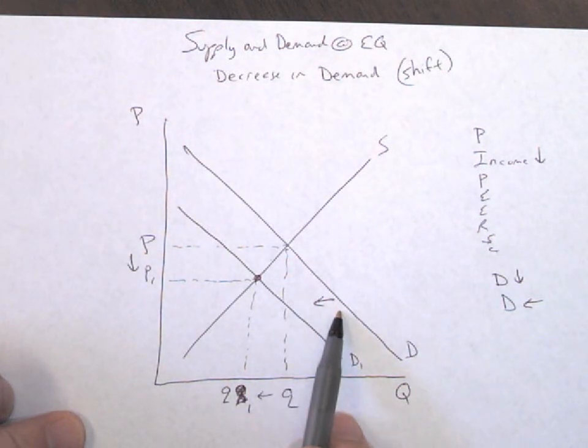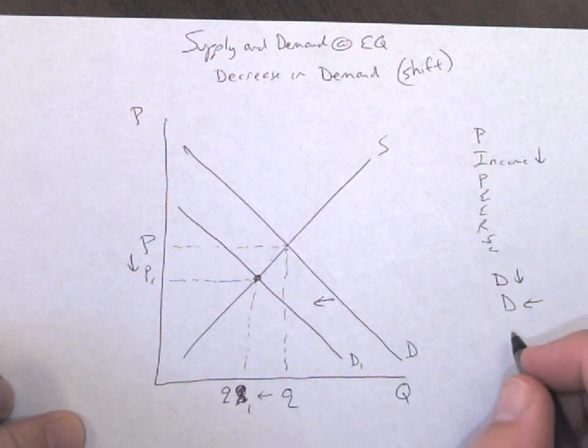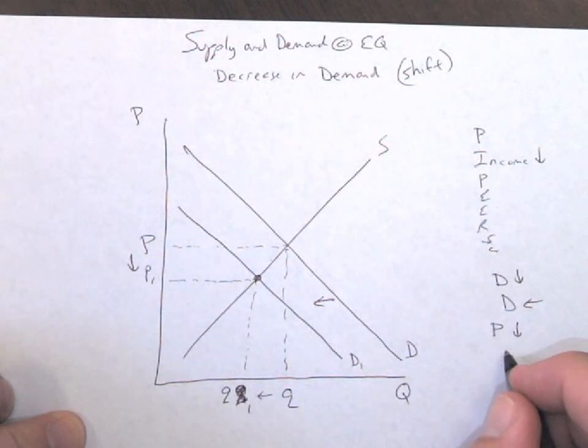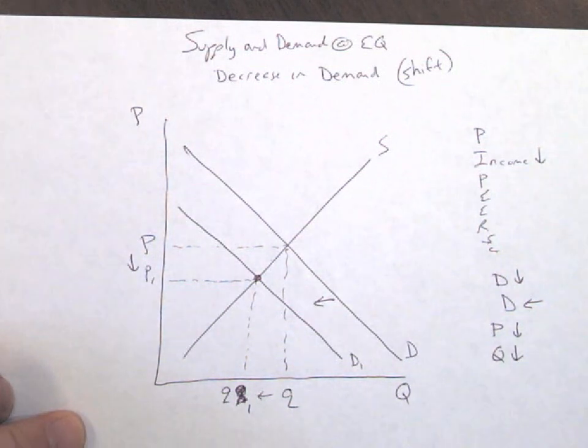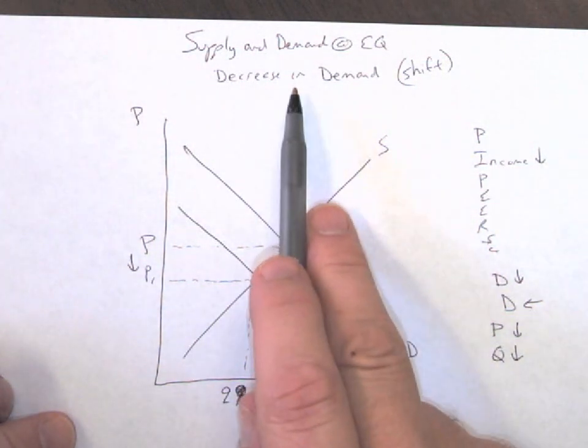So I have my decrease in demand, showing my new equilibrium price. So I know price is going to decrease, and the quantity that was wanted is going to decrease. So this is how I show a shift of a decrease in demand.